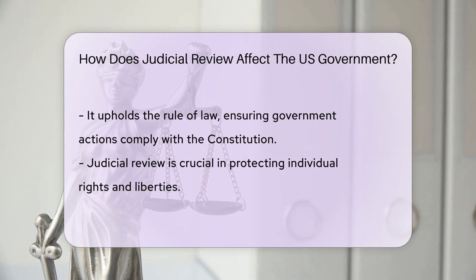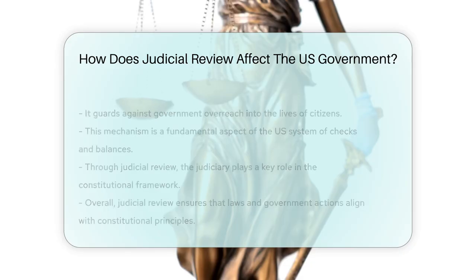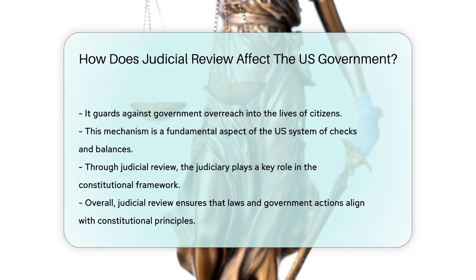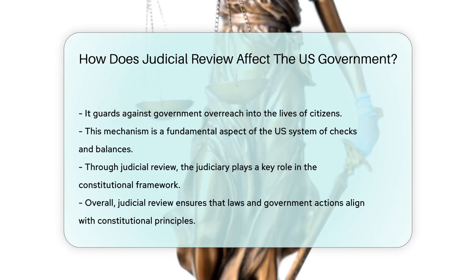Judicial review also upholds the rule of law, ensuring that all government actions comply with the Constitution. It plays a crucial role in protecting individual rights and liberties from government overreach. Overall, judicial review serves as a fundamental aspect of the U.S. government's system of checks and balances.